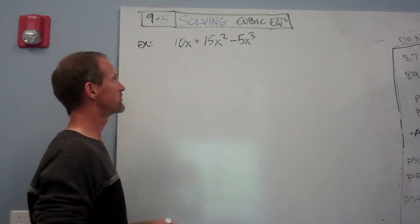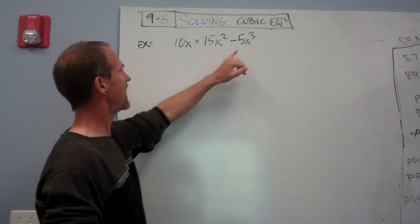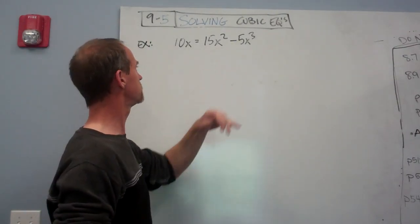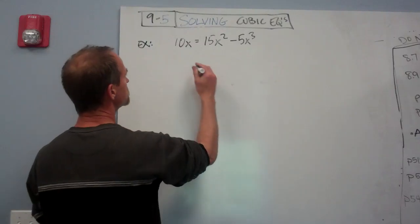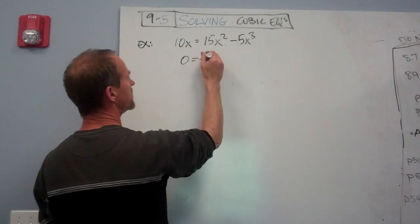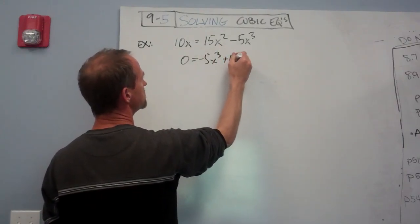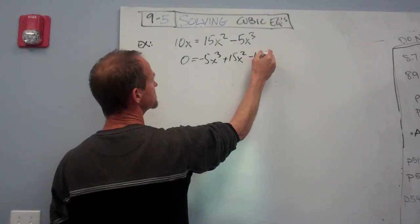What we do is similar to with quadratic. We shove everything over, try to get the lead coefficient for my highest degree term positive, and then see if I can factor it. So if I move this over, I get 0 equals... Now I'm going to put this in standard polynomial form. Minus 5x to the 3rd, and then plus 15x squared, and then minus 10x.